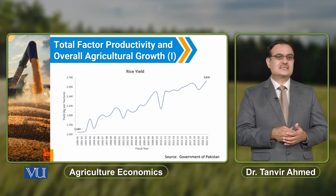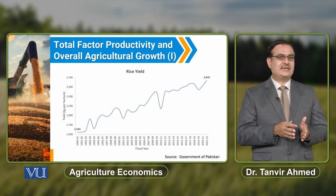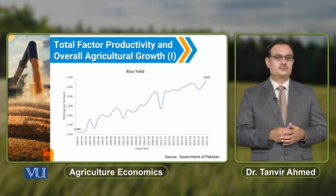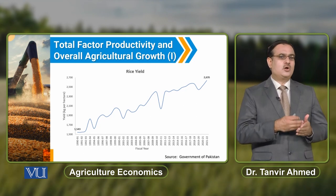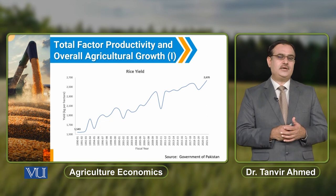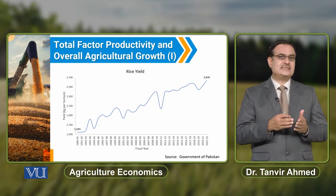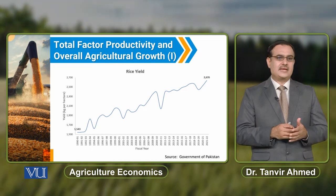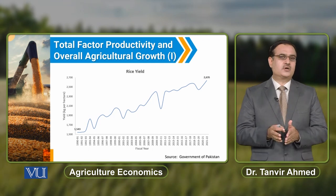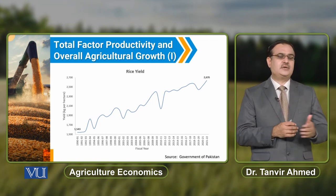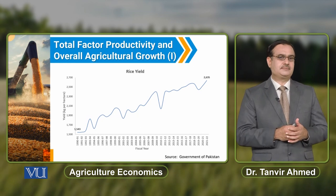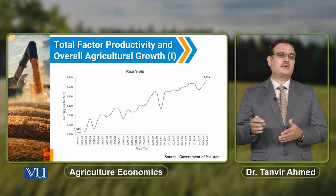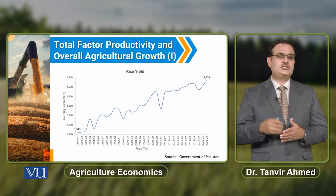If we discuss rice yield with reference to the increase over the time period from 1990 to 2022, there is an increase in rice yield per hectare. In 1990–91, rice yield was 1,543 kg per hectare. But in the 2021–22 time period, this yield increased to 2,635 kg per hectare.